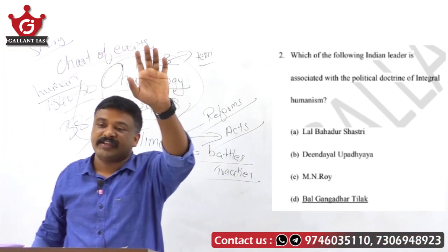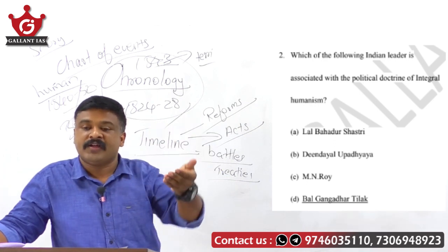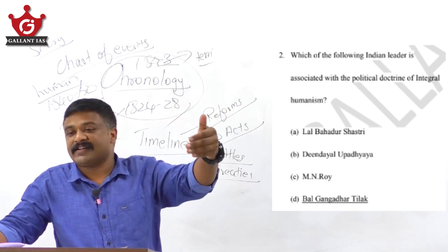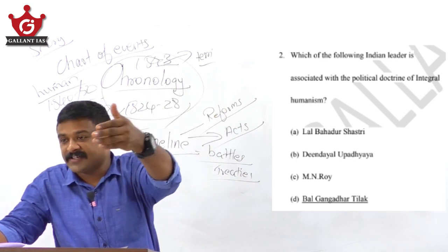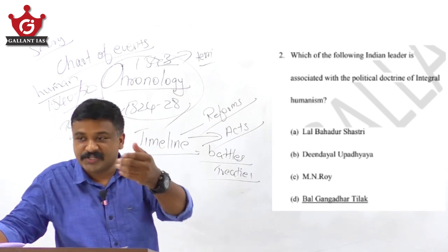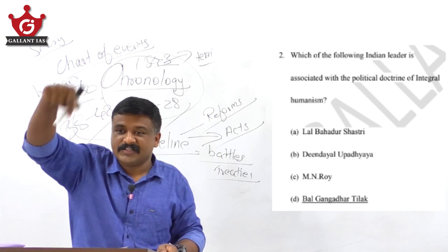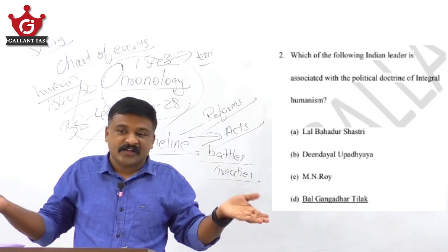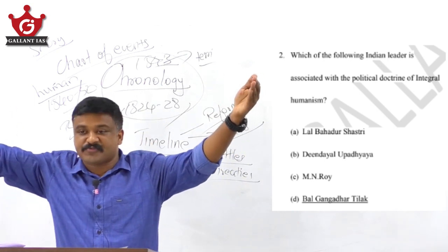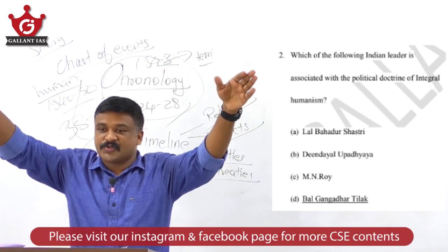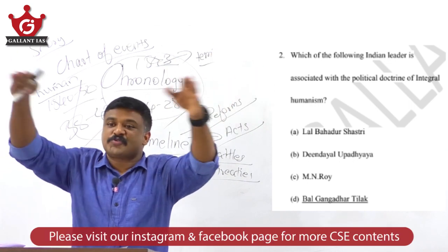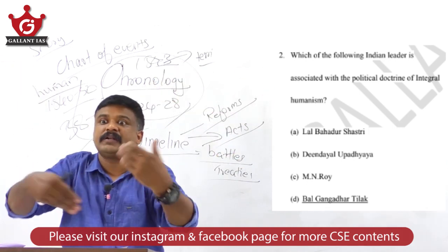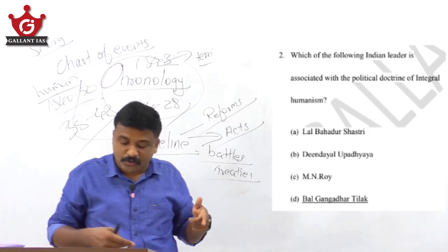He focuses on harmony of the human, nature, and soul, which is essential for achieving SDG goals like fighting climate change — Goal 13. So, integral humanism is Deen Dayal Upadhyaya's philosophy. These ideologies of great leaders of the freedom struggle and modern India — like Subhash Chandra Bose and others — their ideologies and philosophies are repeatedly asked by UPSC in examinations, so take care of such things.